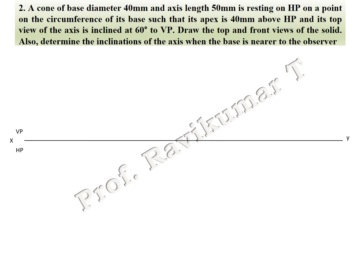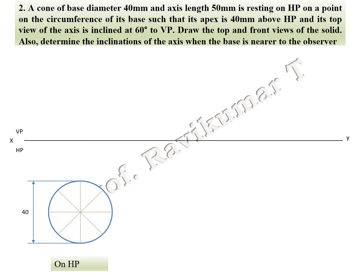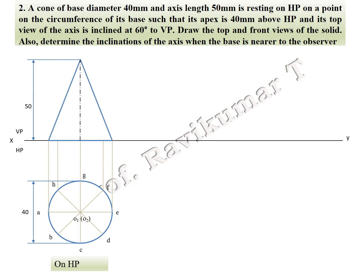First, take a 40 mm circle on HP, divide it into eight parts, and do the naming — this is the top view of the object. Next, extend the projection line, take 50 mm height, then join the circle so it looks like a triangle. Complete the naming.